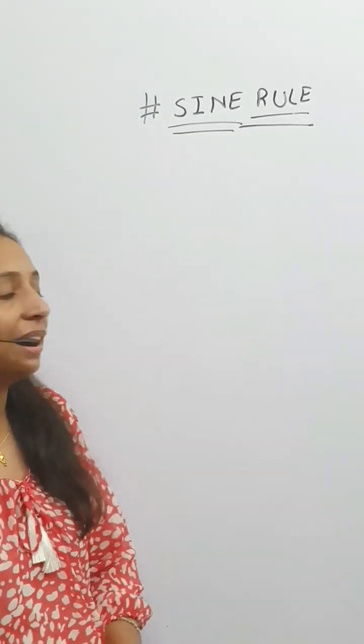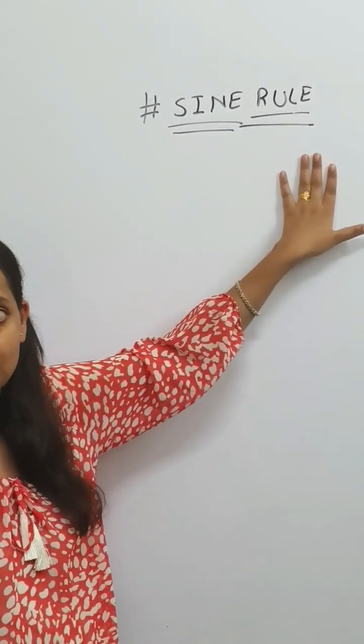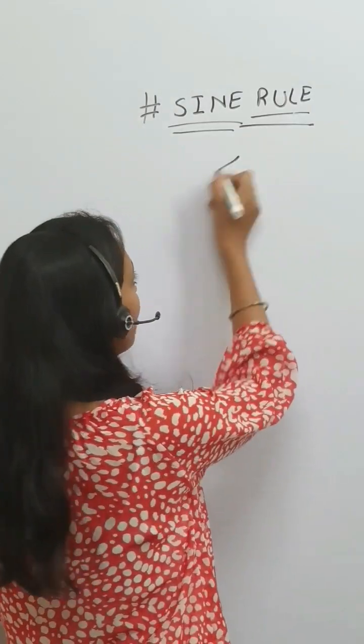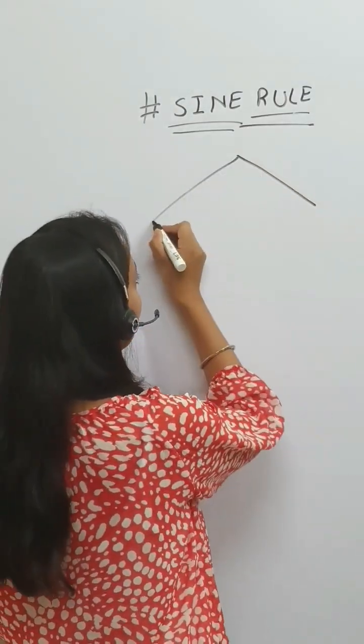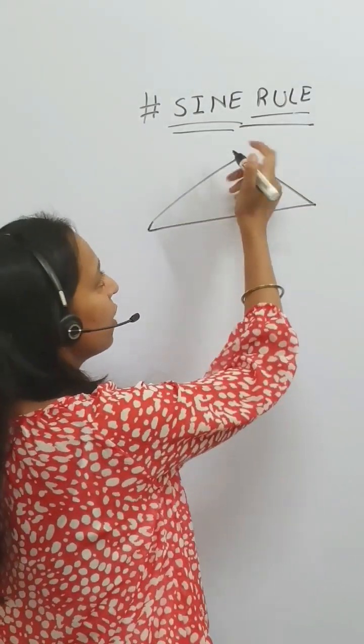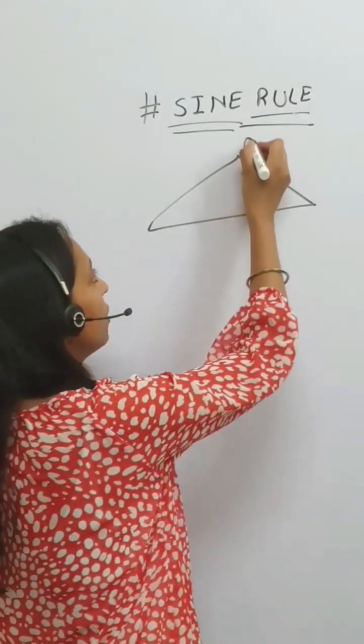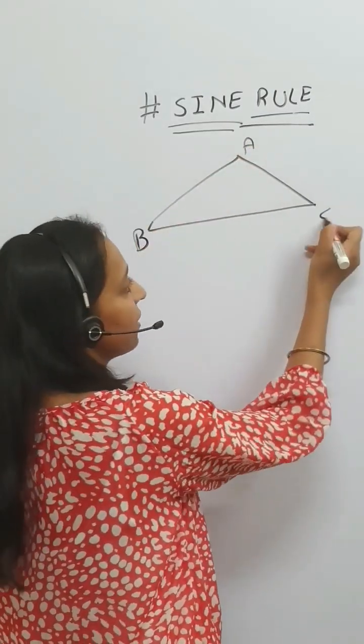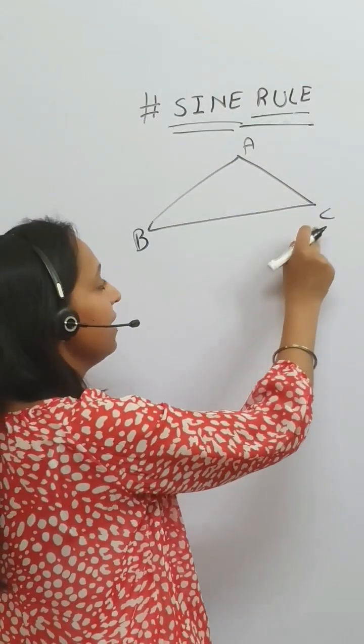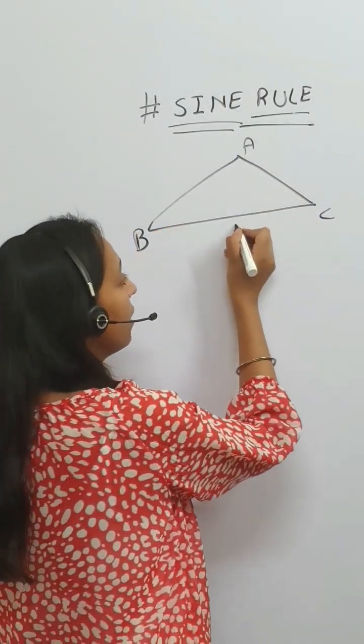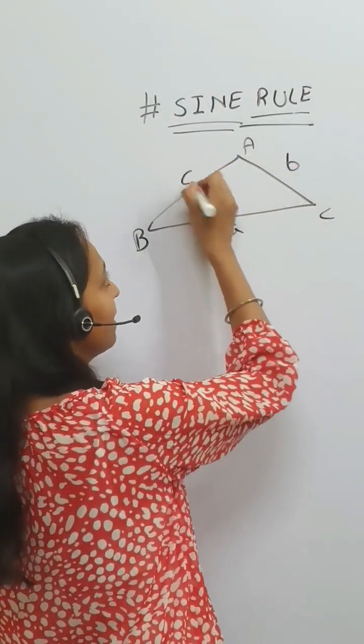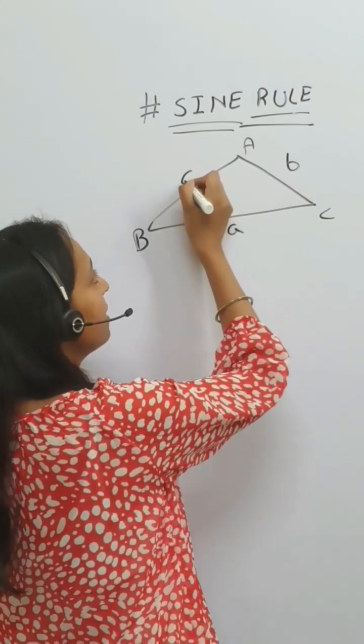Hello guys, in today's class we will cover the sine rule. First, I will draw a non-right angle triangle in which angles are named using uppercase letters A, B, and C, and sides are named using lowercase letters a, b, and c.